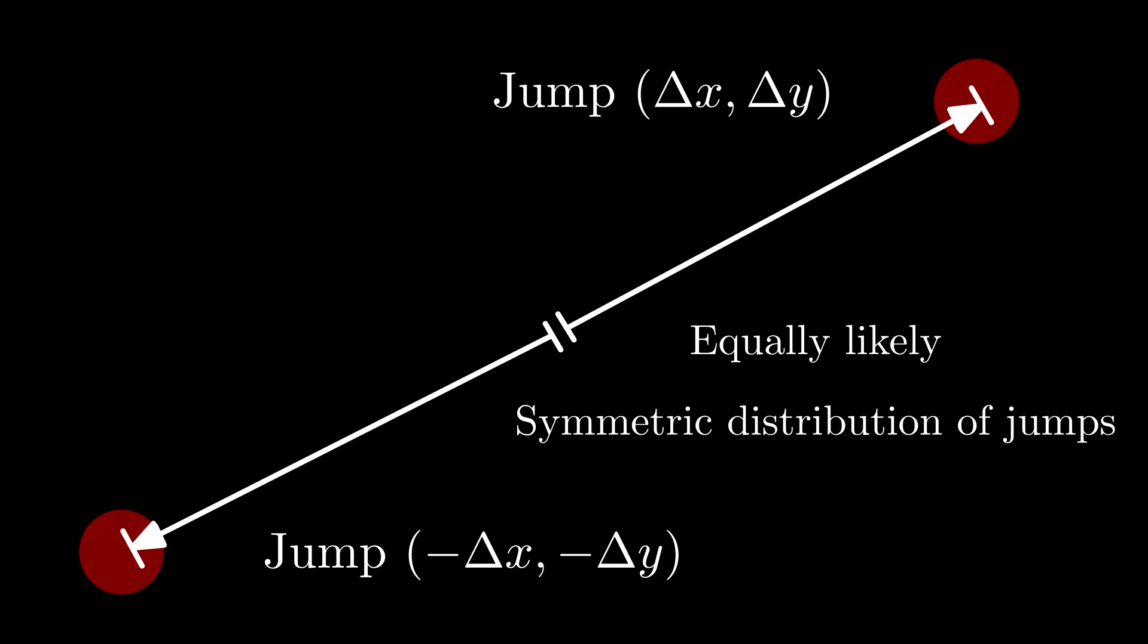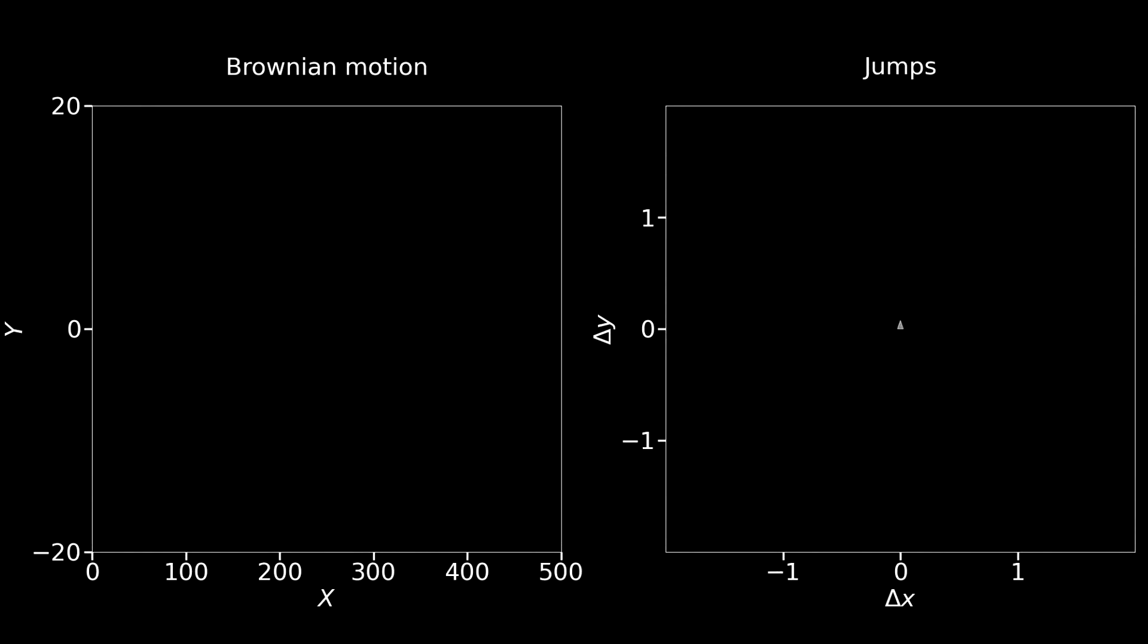If I haven't yet convinced you, take a look at how the Brownian motion would look like if the expected value of the jumps in the x direction was 1.